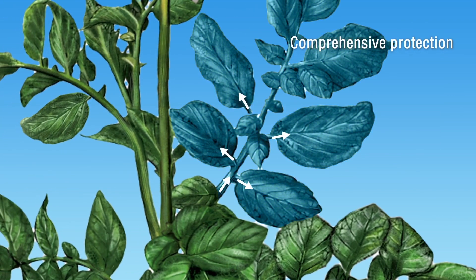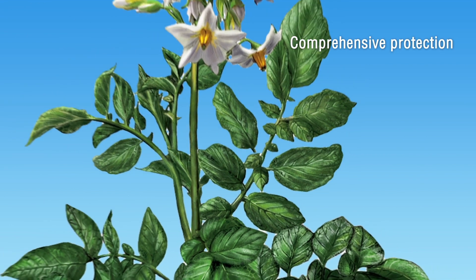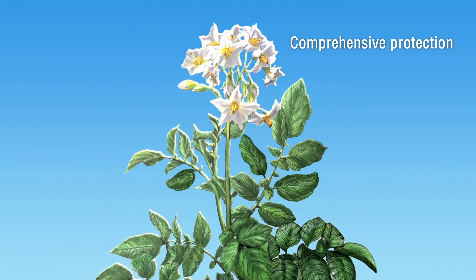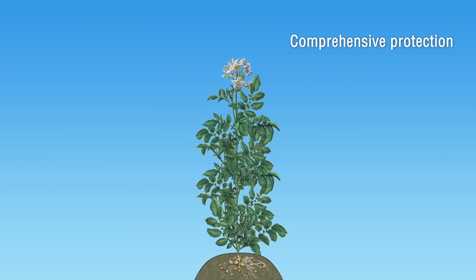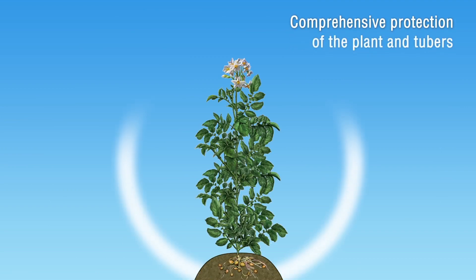Efficient foliar coverage and protection of the entire leaf, stem, and new growing points provides comprehensive protection of the whole plant against late blight. A long-lasting protective shield is built up around the plant, ensuring high yields and healthy products.